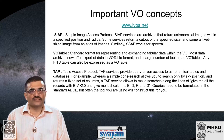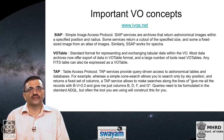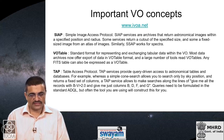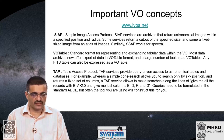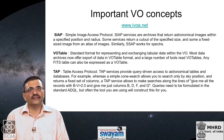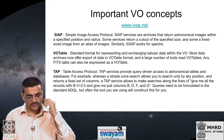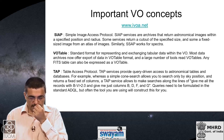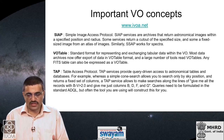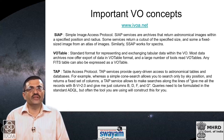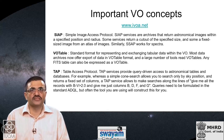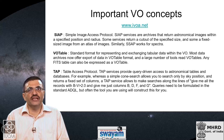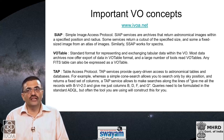To improve access to astronomical catalog data, the VO developed a new protocol called TAP — Table Access Protocol. TAP provides query-driven access to astronomical tables and databases. For example, with a simple cone search you can only search by sky position and it returns a fixed set of columns. A TAP service, on the other hand, allows you to make searches like: give me all records with B minus V greater than 2.0, referring to the colors of stars or galaxies, and give me just columns B, D, F, and G. So you can choose what columns you want and put conditions on the kind of sources you are looking for.